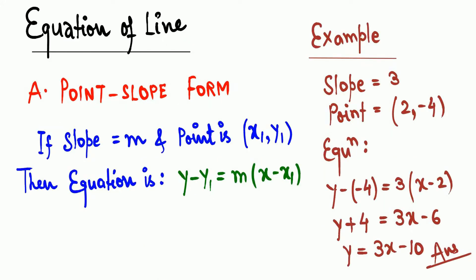Next we have the equation of a line. The first format is point-slope form: you are given a slope value and a coordinate point, and asked to find the equation. The equation is y - y1 = m(x - x1). For example, slope = 3 and point = (2, -4): y - (-4) = 3(x - 2), which simplifies to y = 3x - 10.